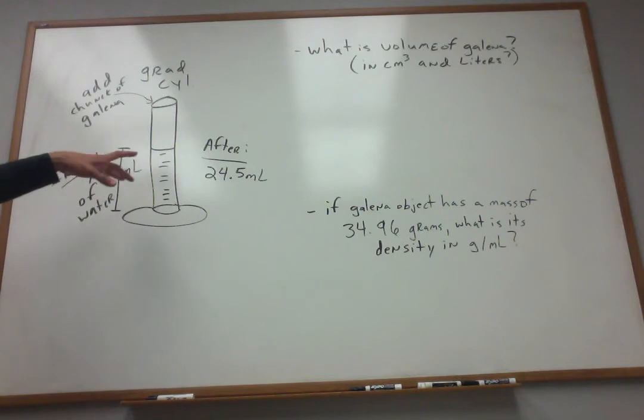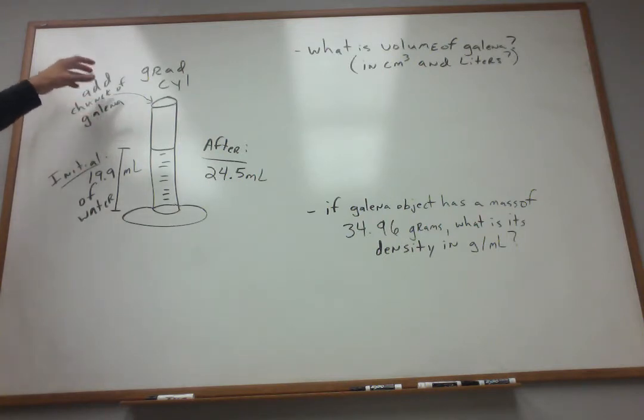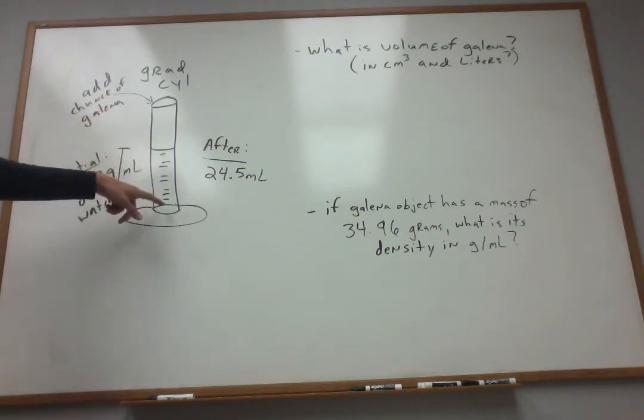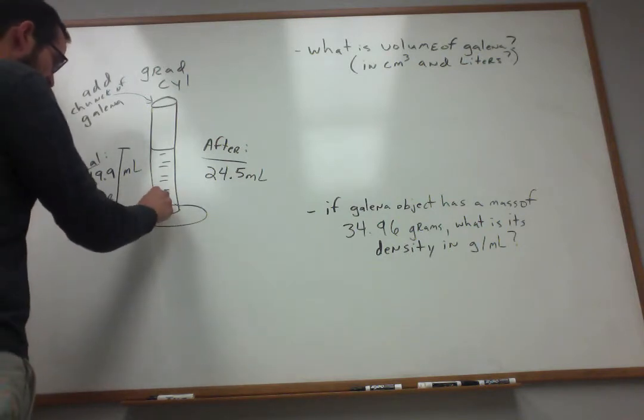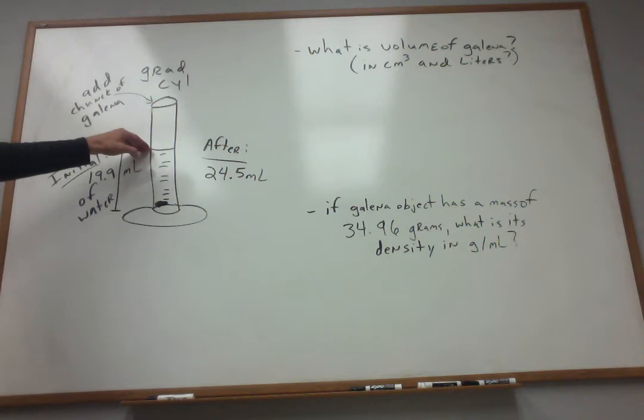What this problem tells us is that initially we fill this graduated cylinder up with 19.9 milliliters of water. That's our initial volume reading of water, and then we're going to obtain an object made out of an ore called galena. We're going to take this chunk and throw it down into our graduated cylinder. It's pretty dense so it sinks to the bottom, so we end up having this chunk of galena down here in the bottom.